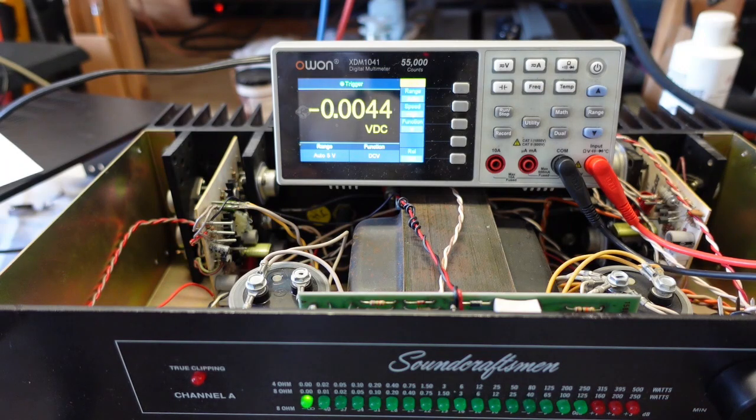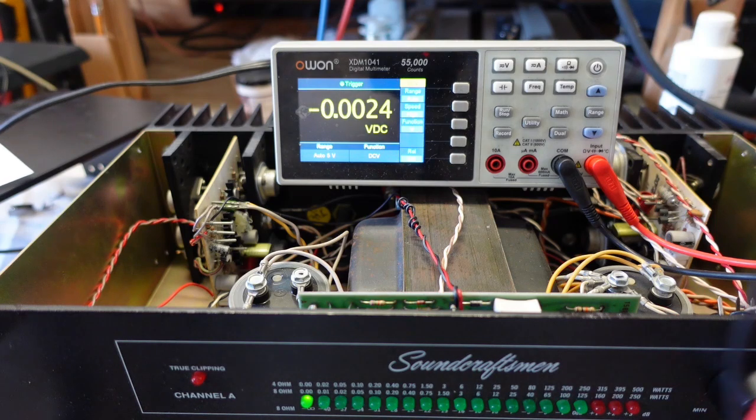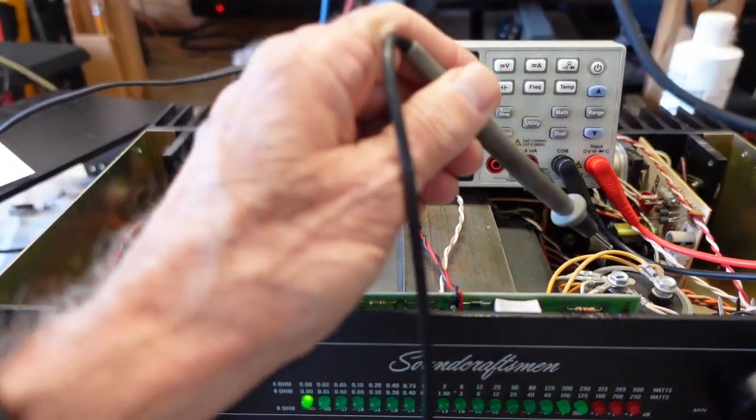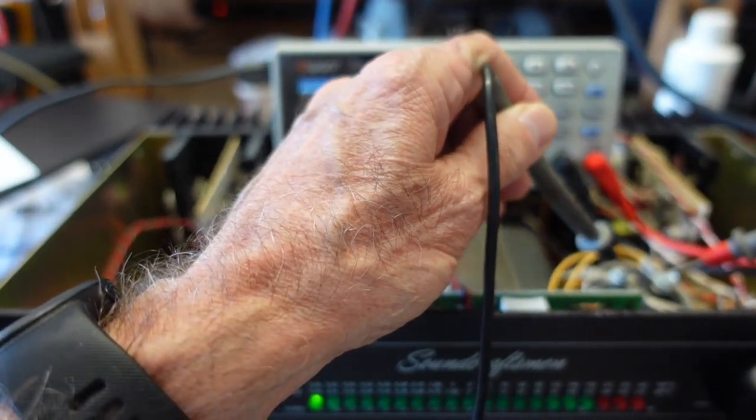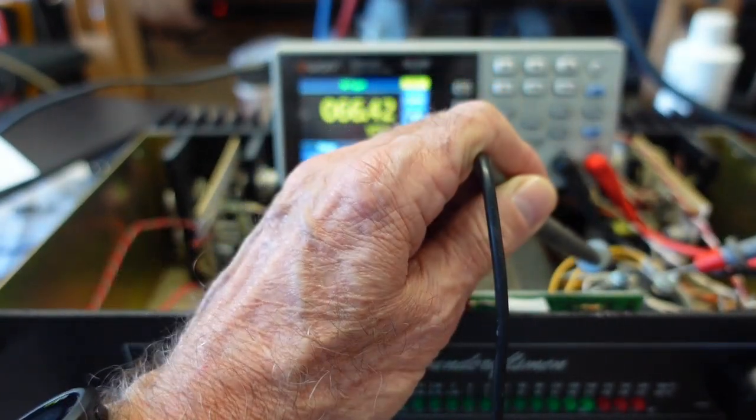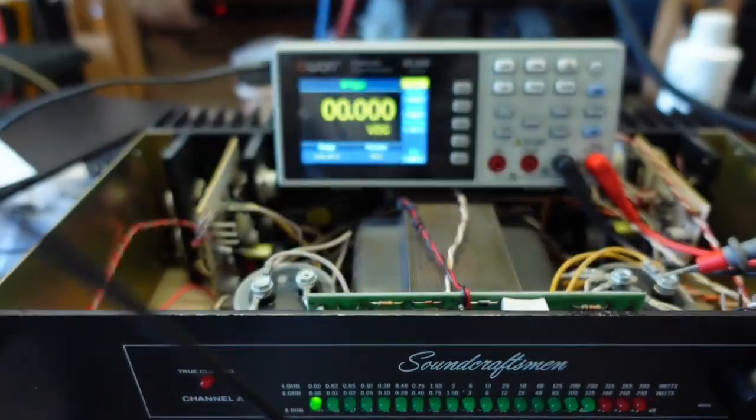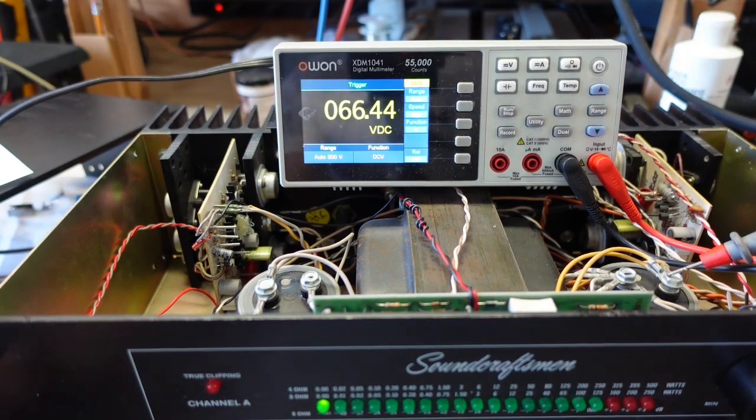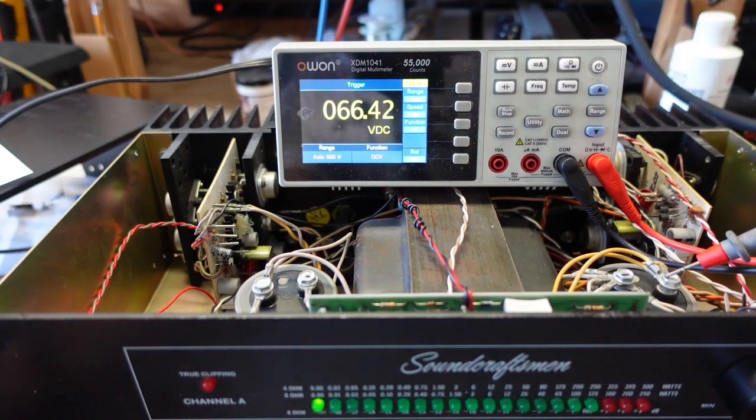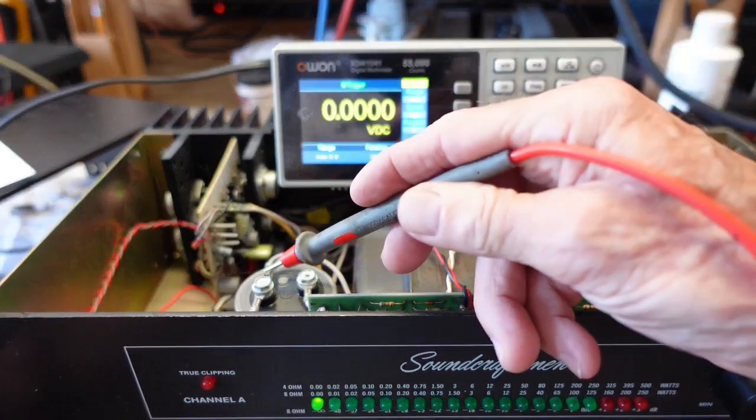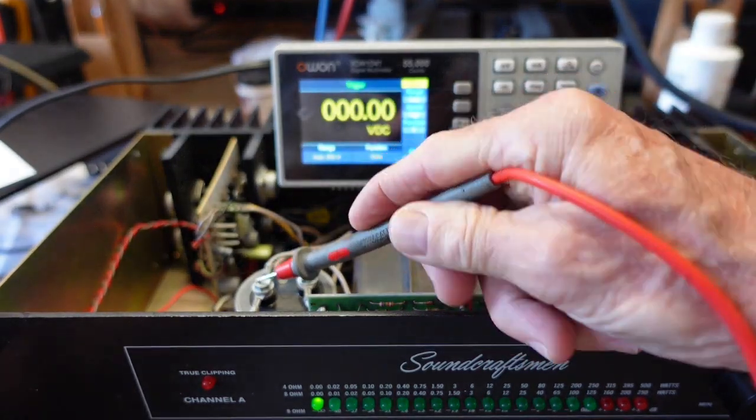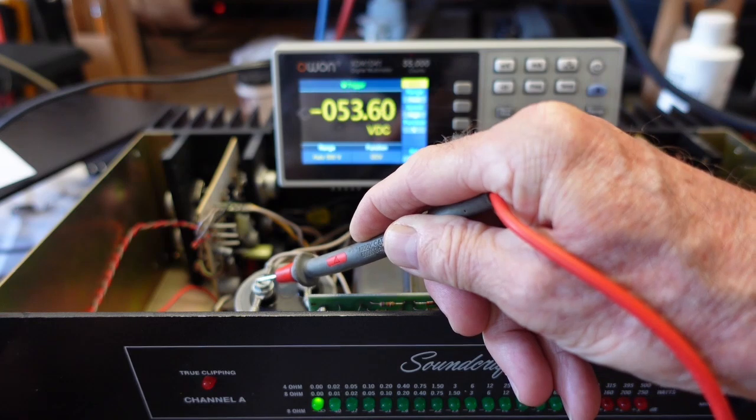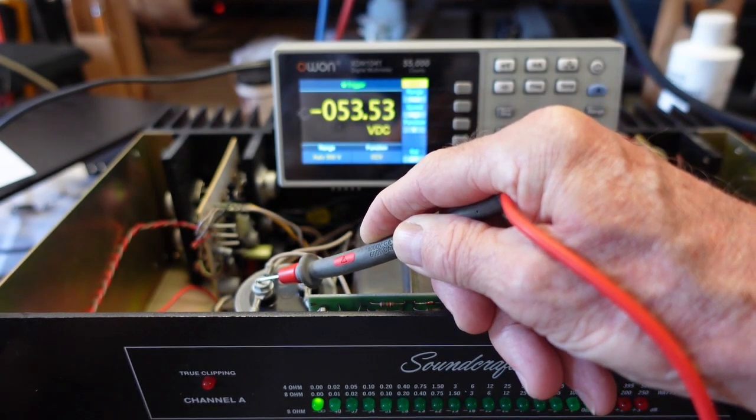Okay schematic says that we should have a positive and negative 68 volts. So if we look here at this capacitor and I get my hand out of the way so maybe it focuses. Here let's just do this. All right so we get 66.4 here and we get about 53.54 here.